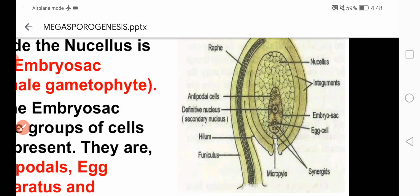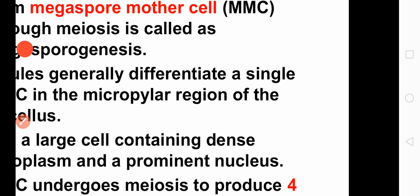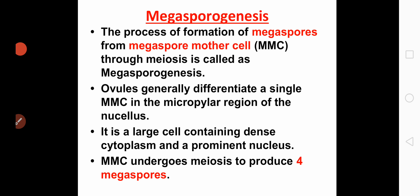At the chalazal end, antipodals are present. At the micropylar end, the egg apparatus is present, which consists of one egg cell and two synergids. At the center is the secondary nucleus. Now coming to the process of megasporogenesis — the process of formation of megaspores from a megaspore mother cell through meiosis. Ovules generally differentiate a single megaspore mother cell in the micropylar region of the nucellus; it is a large cell containing dense cytoplasm and a prominent nucleus.